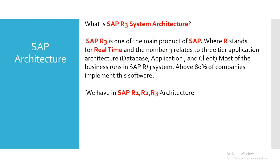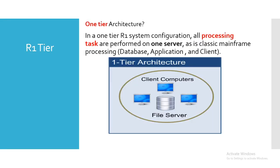In SAP we have R1, R2, and R3 architecture. R1 is a one-tier architecture where all processing tasks are performed on one server — this is classic mainframe processing where the application, database, and client all reside in one server.